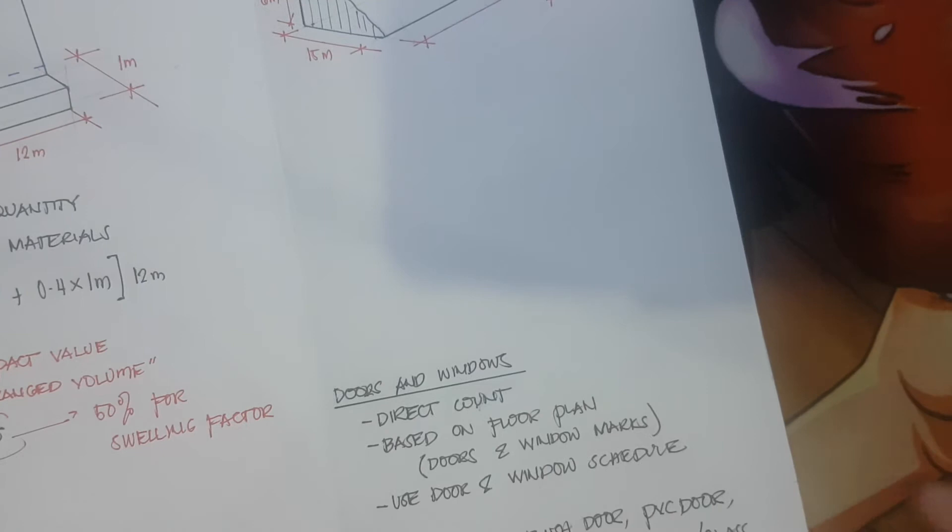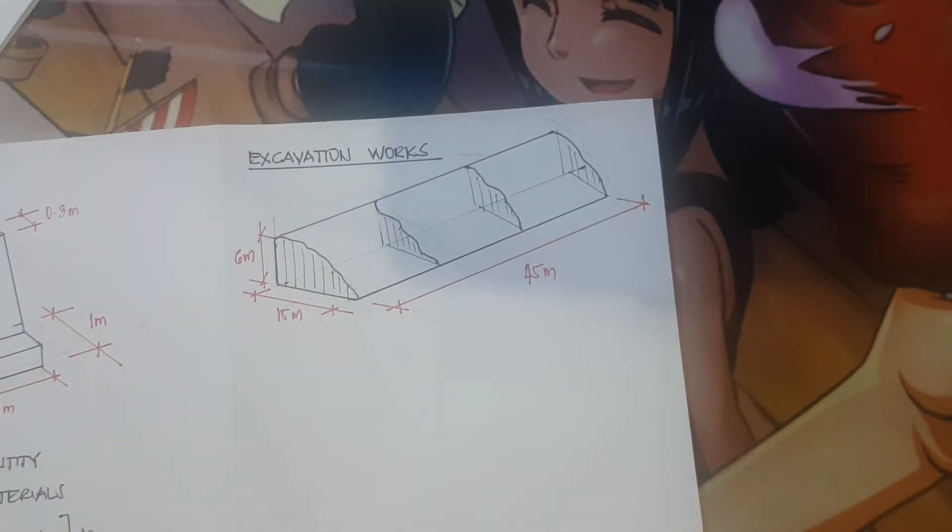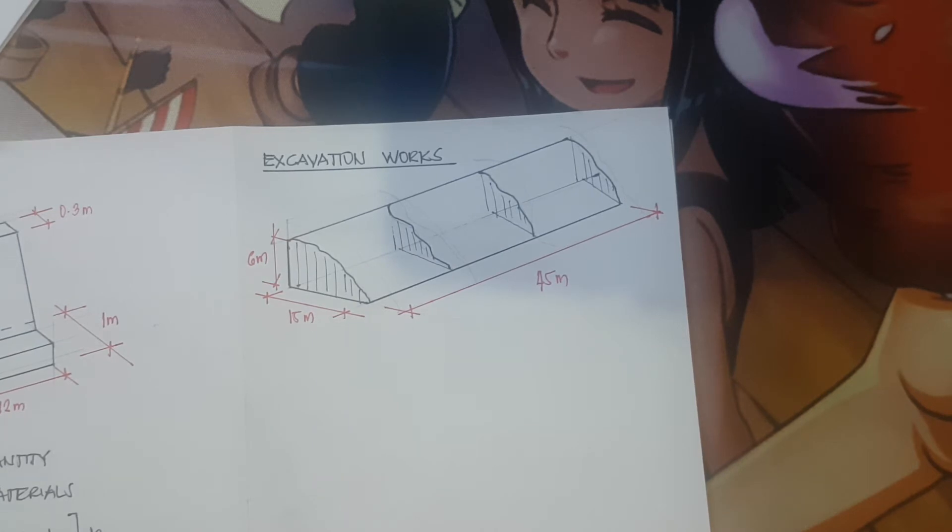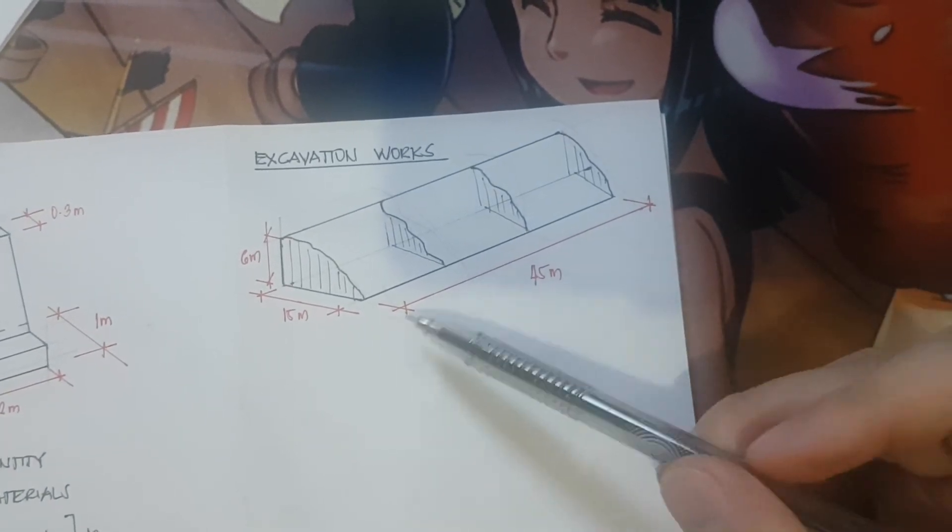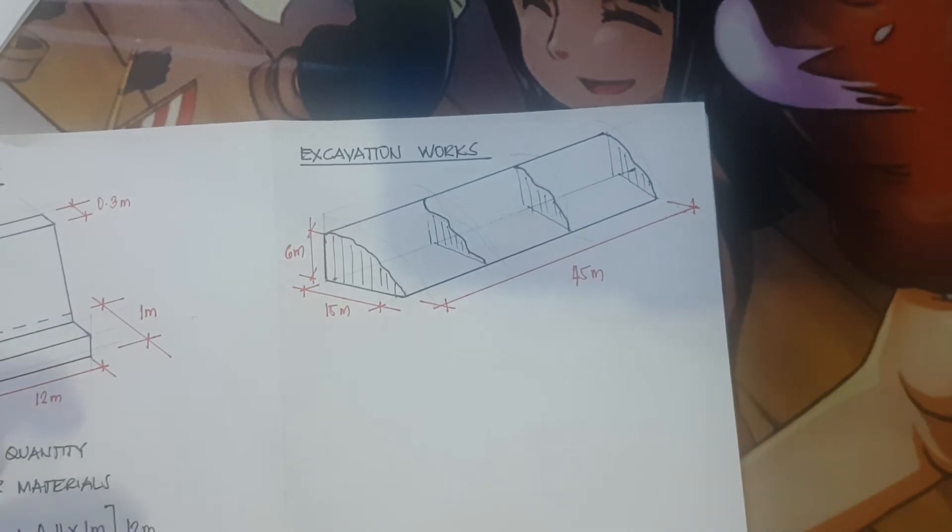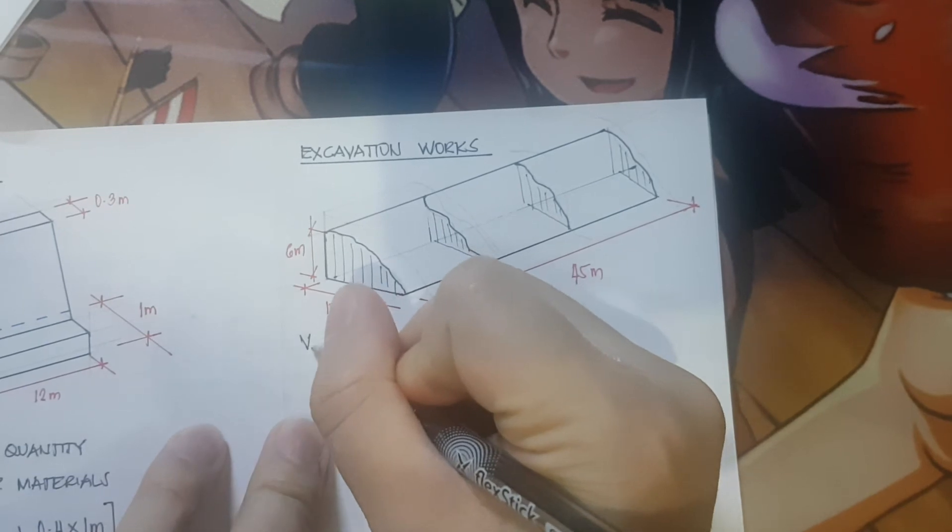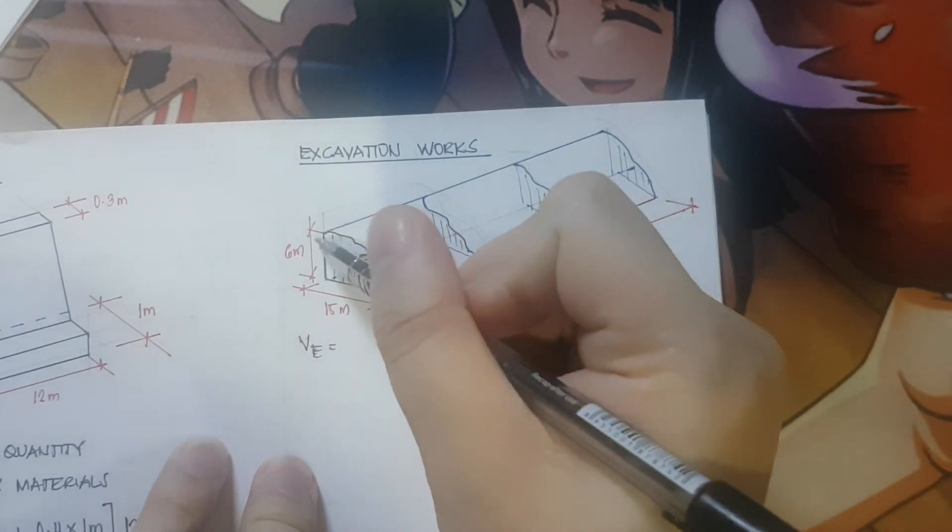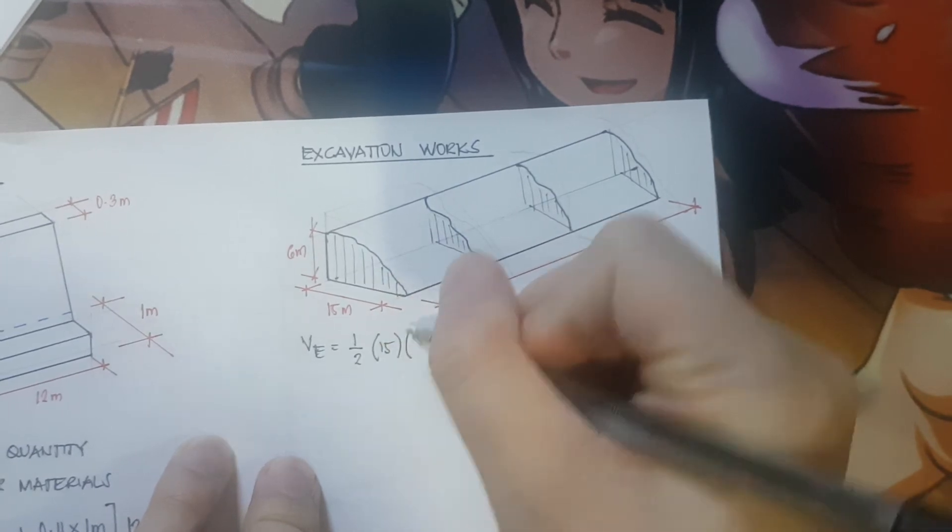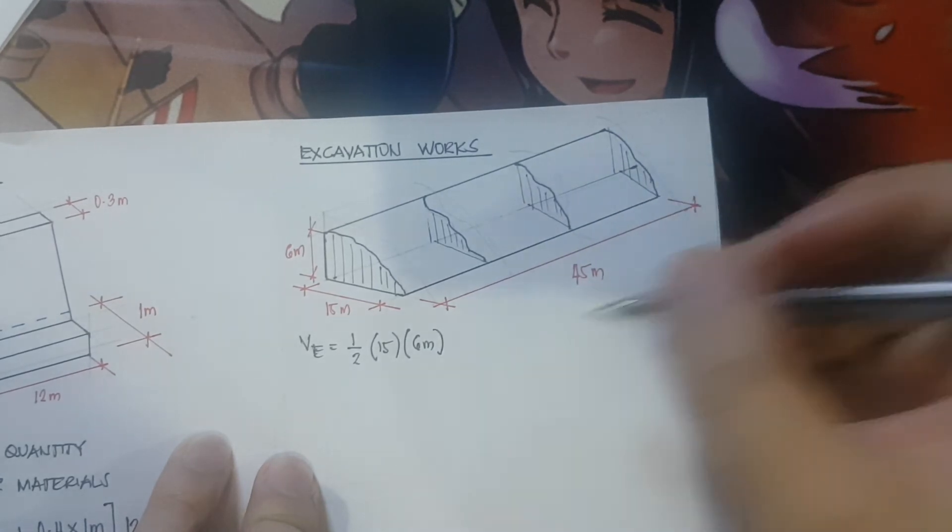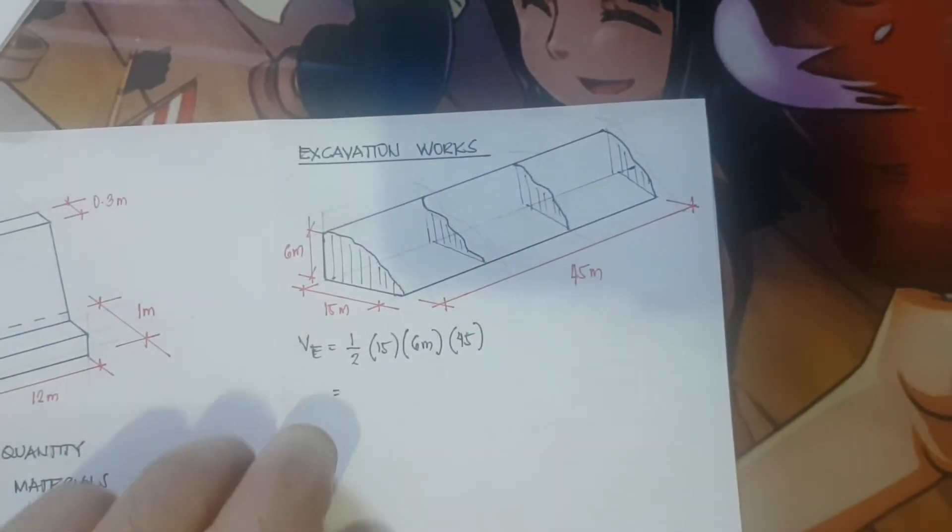Let's proceed with excavation works. For excavation works I know that we've used different formulas from your engineering surveys, but for this problem we're just going to simply use triangle. It would be a lot easier, and it's not that long compared to roads that are kilometers long. This time it is just 45 meters. Excavation work is simply determining the volume. The volume of excavation: since we are going to consider it as a triangle, it is one half base which is 15, times height of 6 meters, times the span of 45 meters. Therefore, the volume to be excavated is equivalent to 2025 cubic meters.